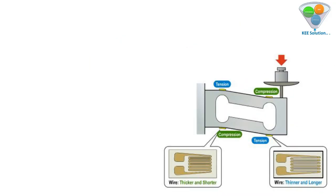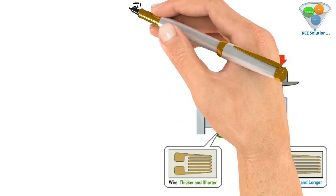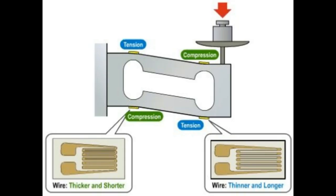Here we have a hanging load cell with four strain gauges. When we apply force from the top or the side of the load cell, there is some tension and compression in the strain gauges — some got thicker and shorter, and some got thinner and longer.